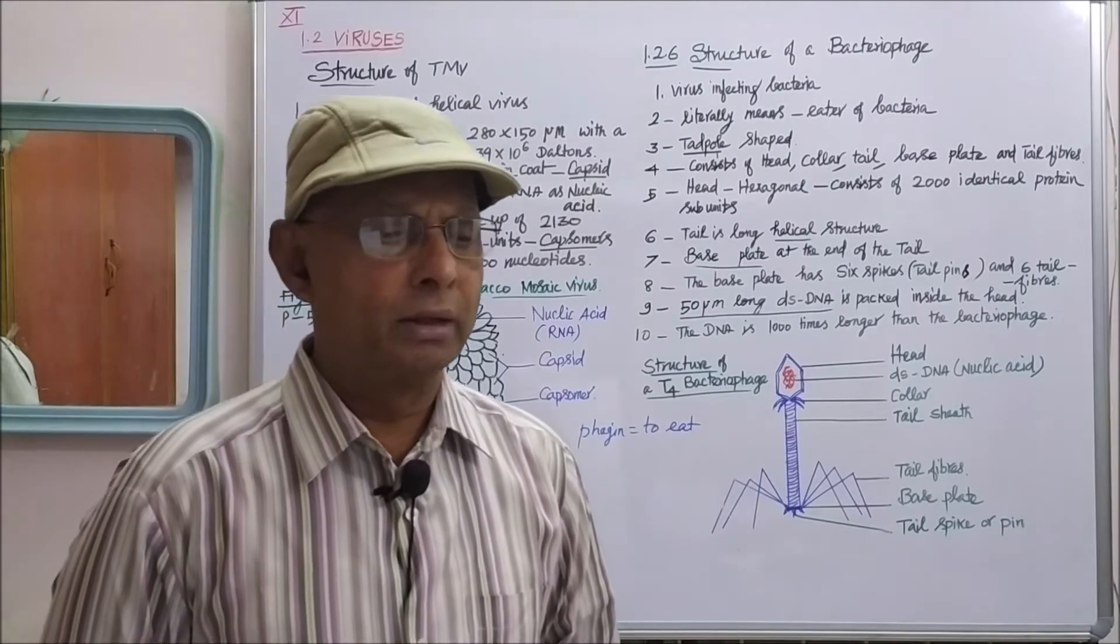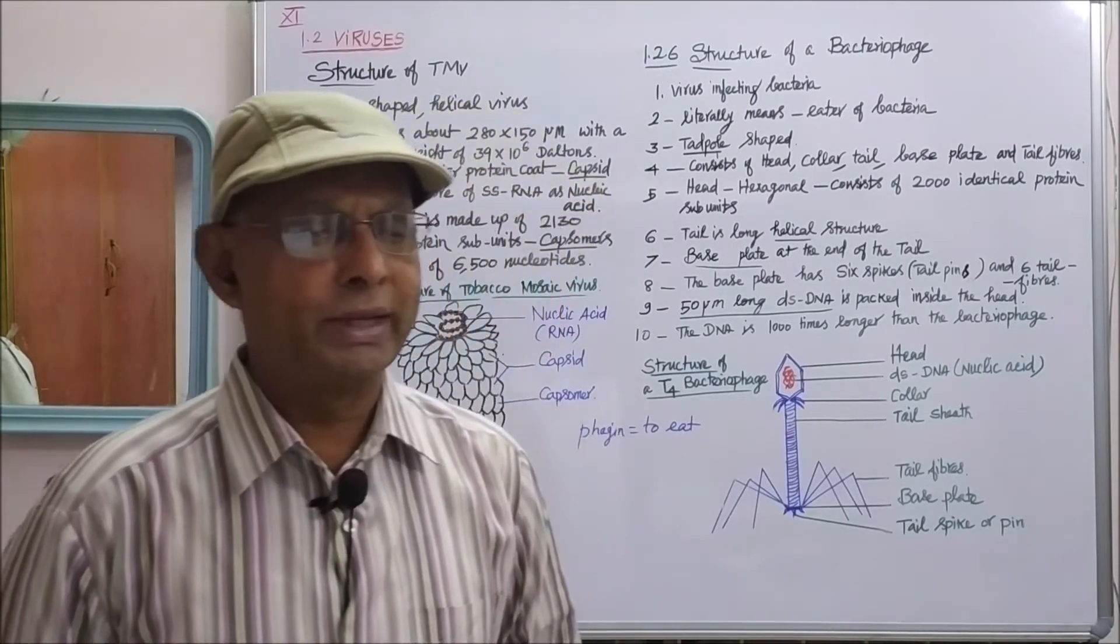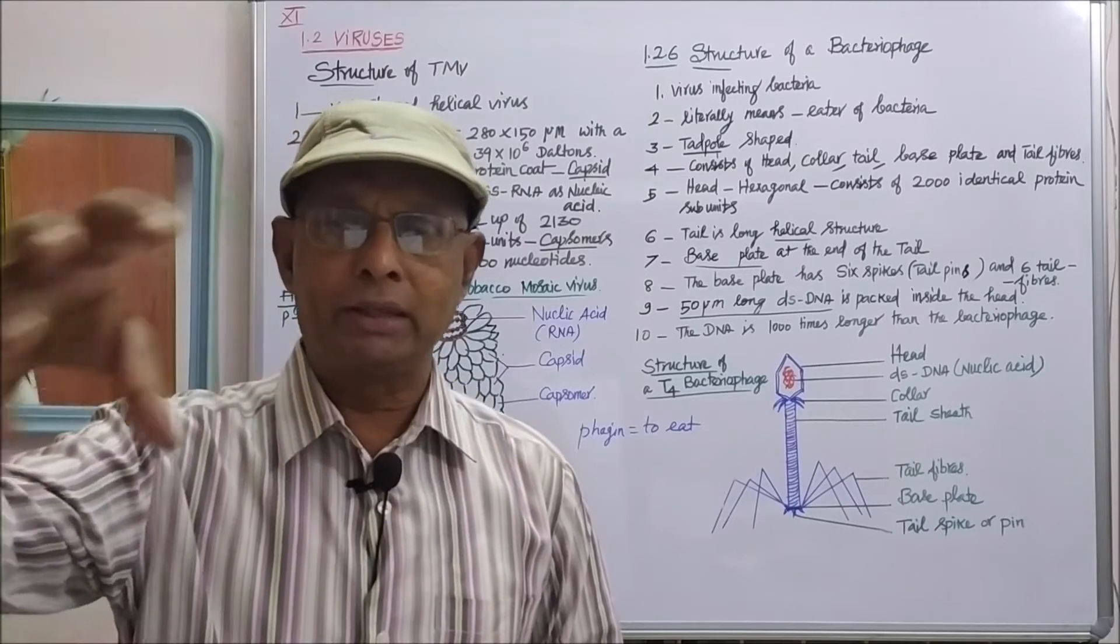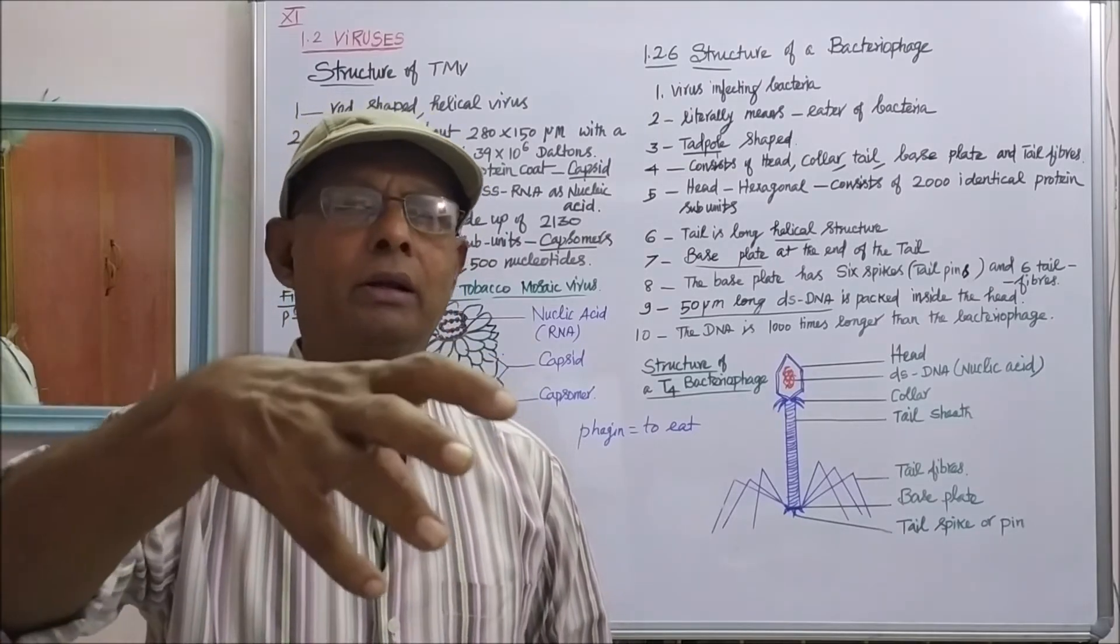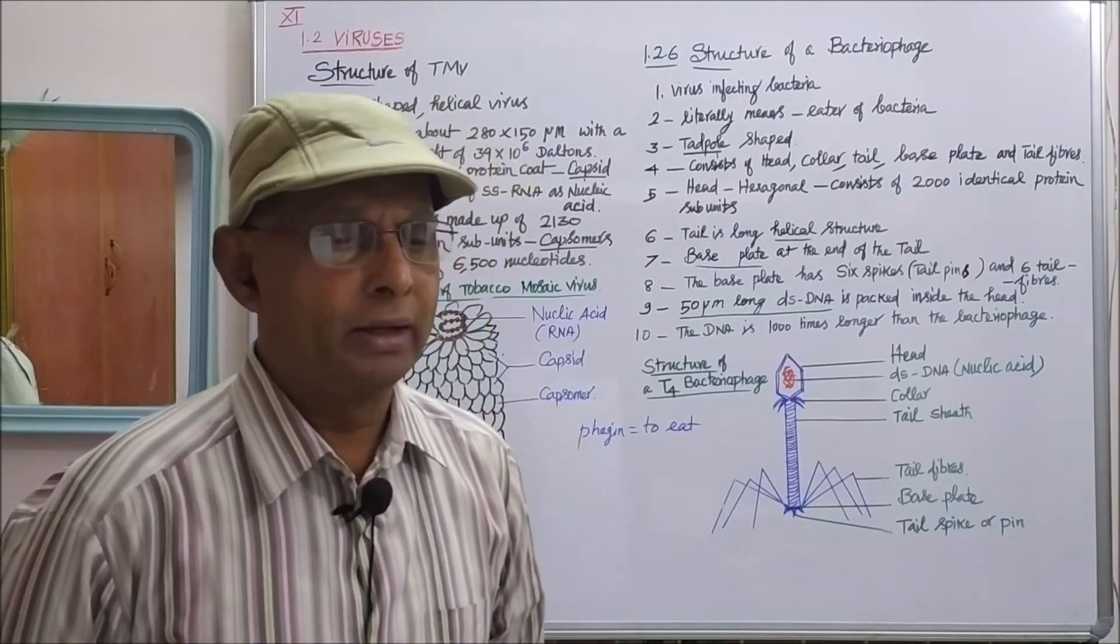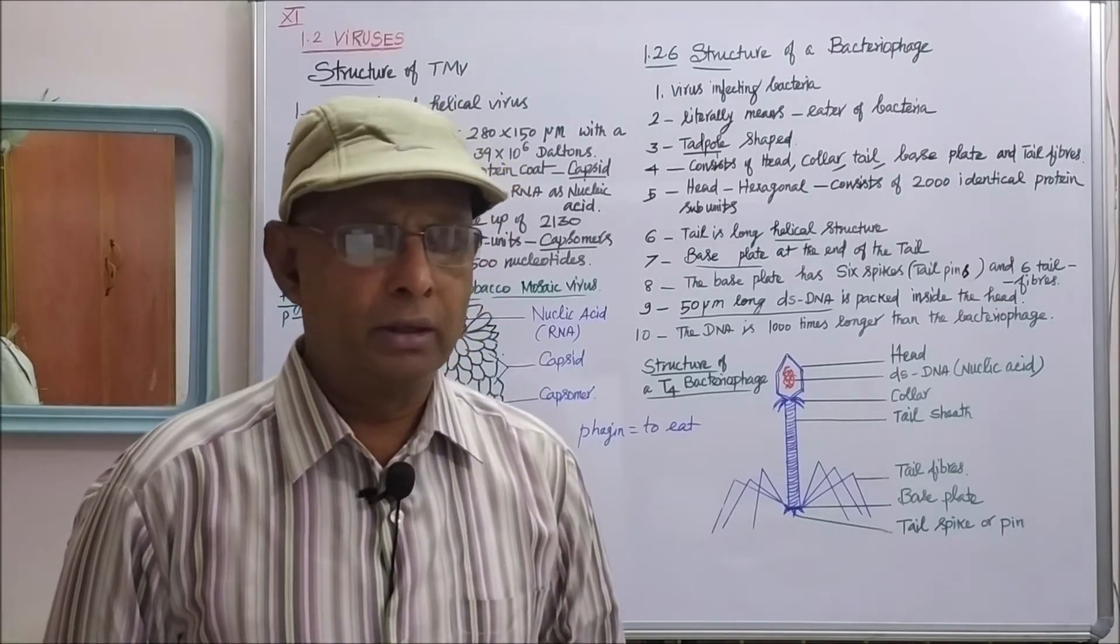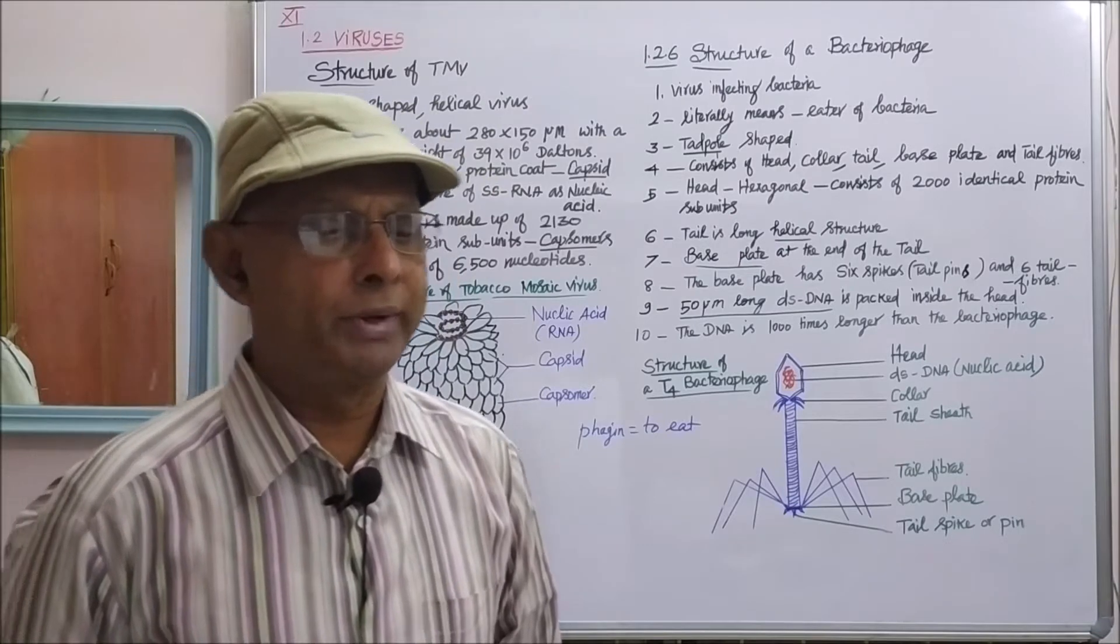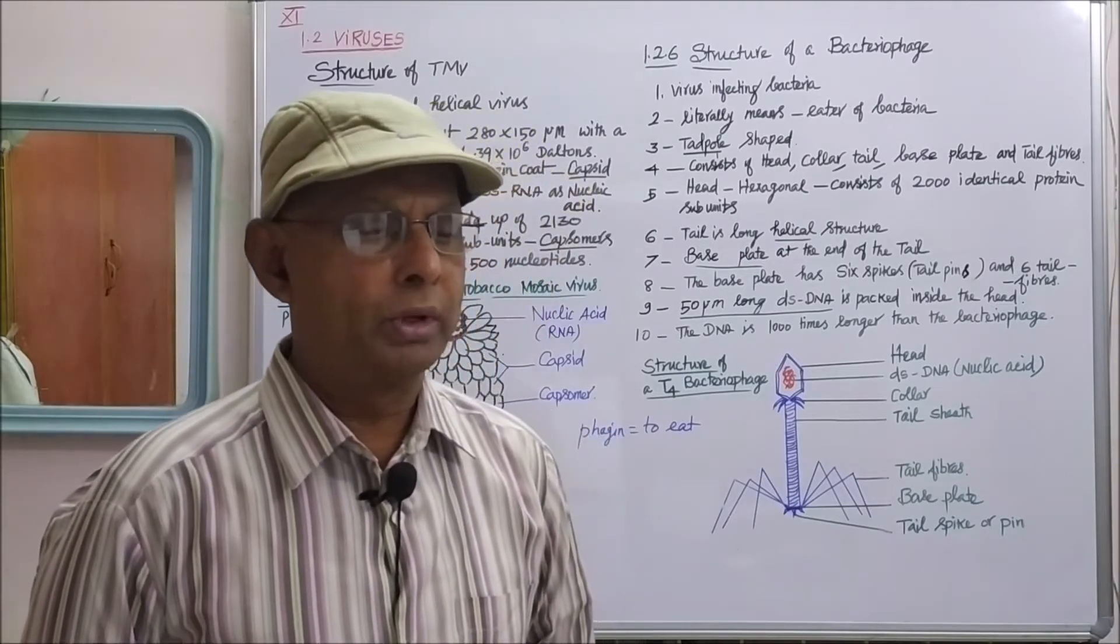Second, green mottling, which is the mosaic symptom. You can see patches of green color and yellow color patches like mosaic. That mosaic pattern is called green mottling.